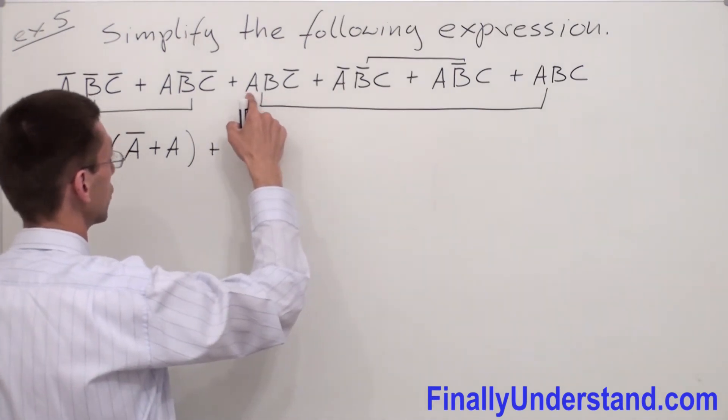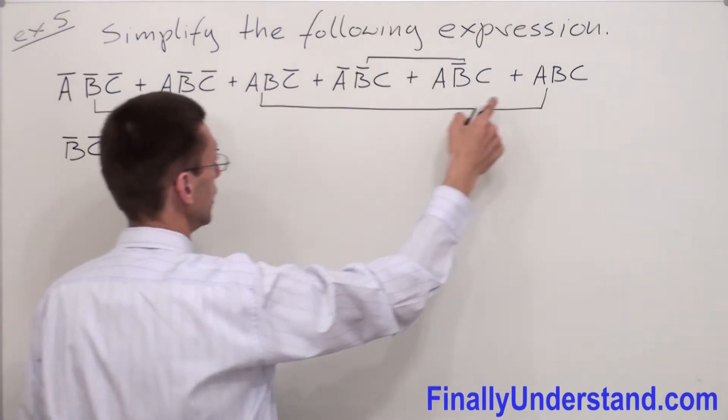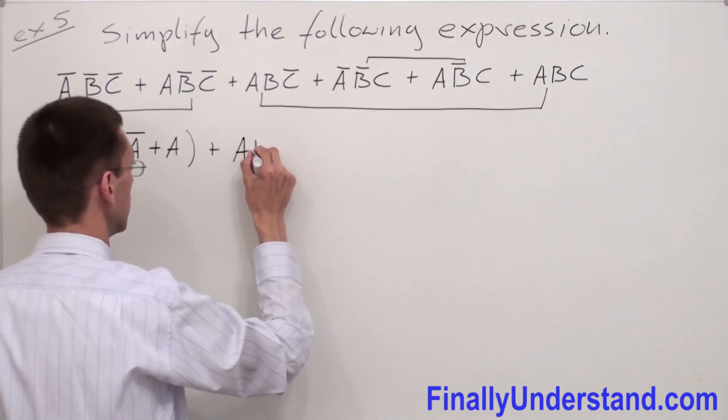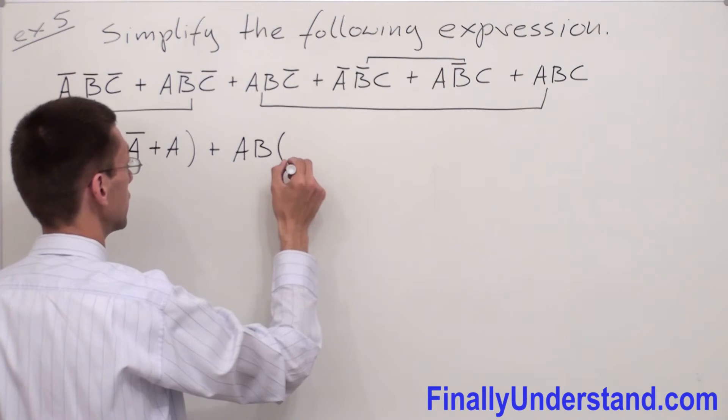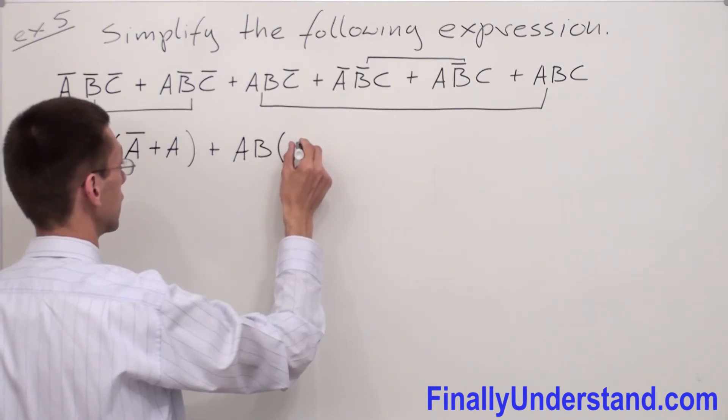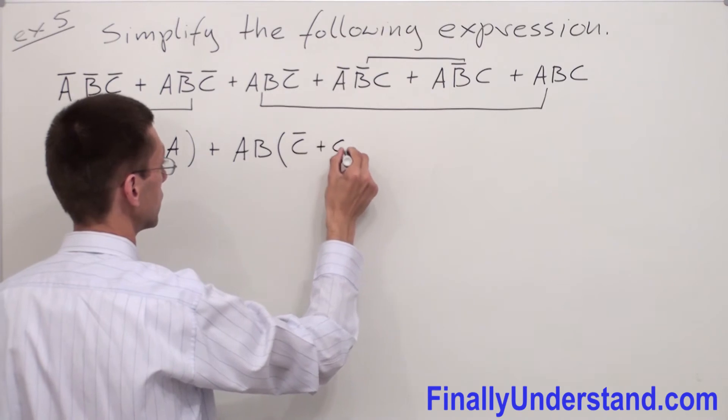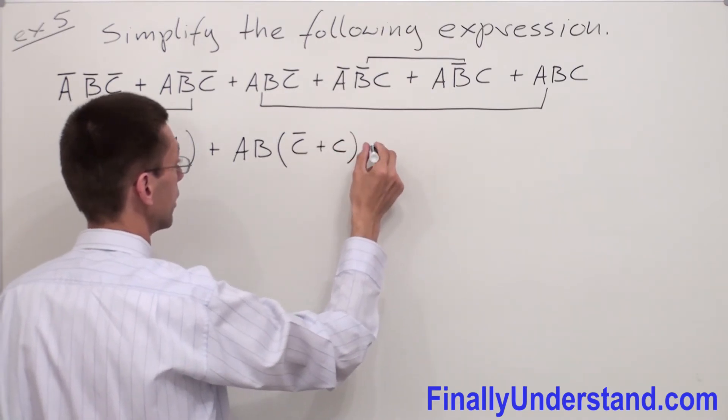We said we are going to factorize AB from here and AB from here. So I'm going to have AB on the front of the parenthesis. And inside of the parenthesis I'm going to have C̄ plus C.